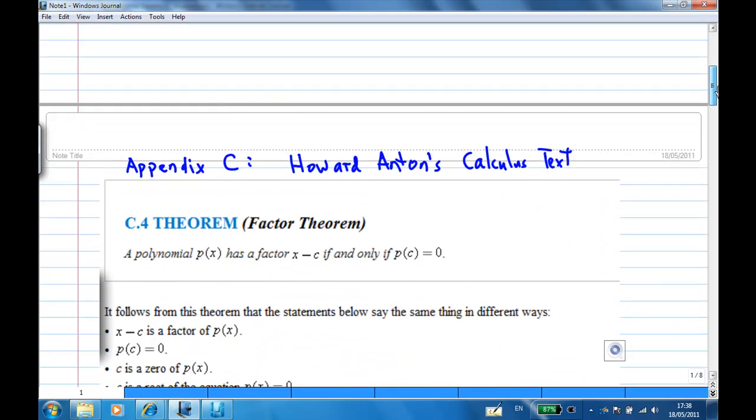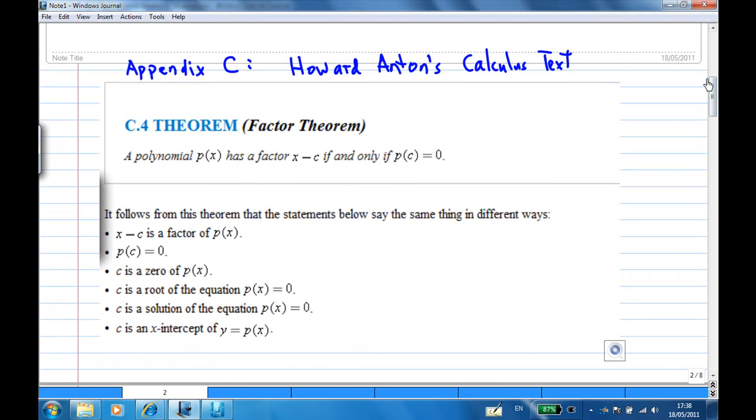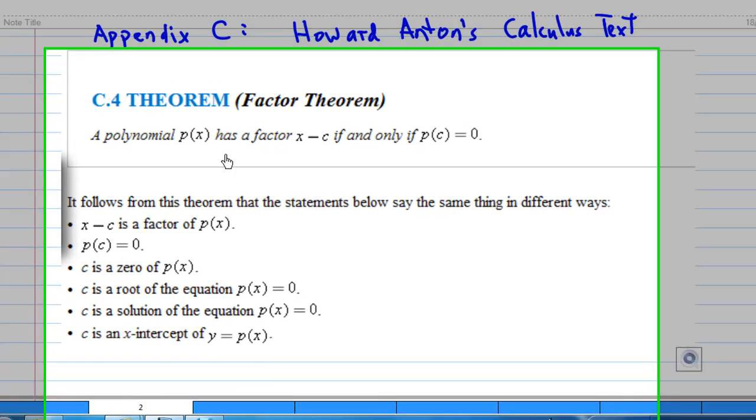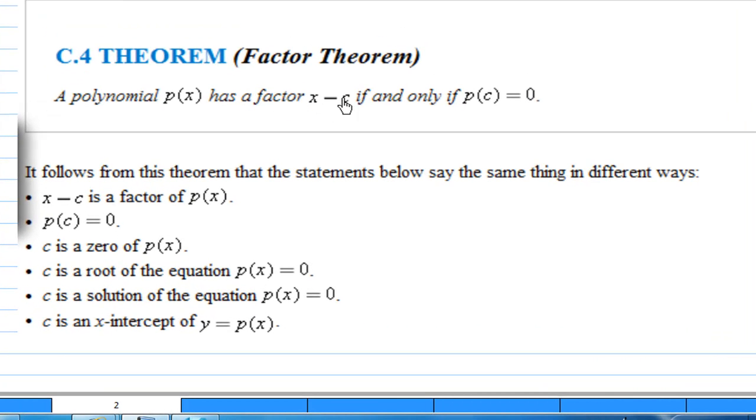What is Factor Theorem? This is found in appendix C of the textbook. A polynomial p(x) has a factor x minus c if and only if p(c) equals 0.